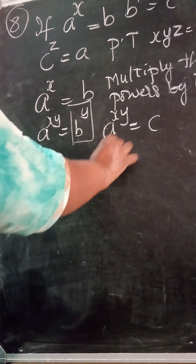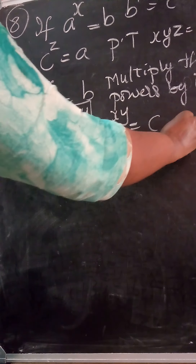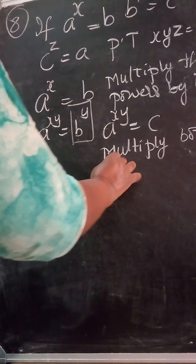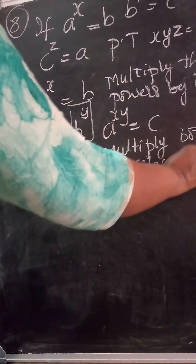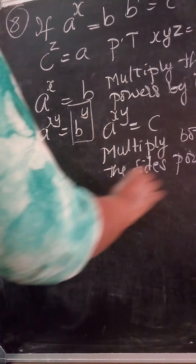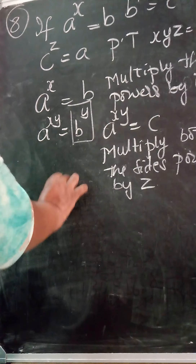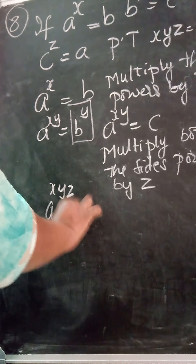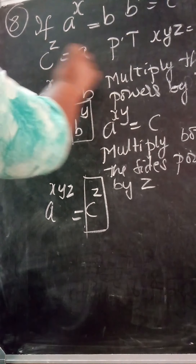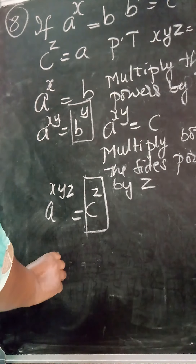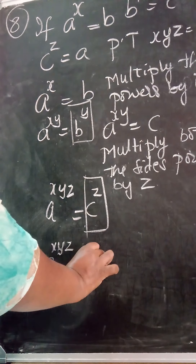Now multiply both sides' powers by z. So a raised to the power of xyz is equal to c raised to the power of z. But c raised to the power of z is given as a, so a raised to the power of xyz is equal to a.